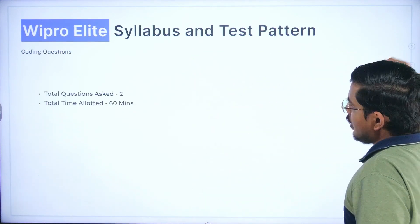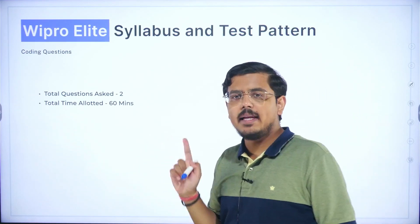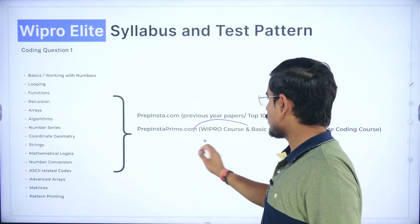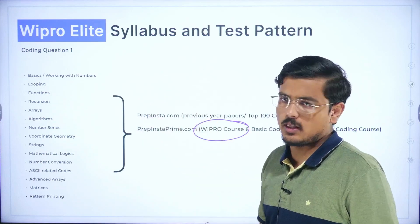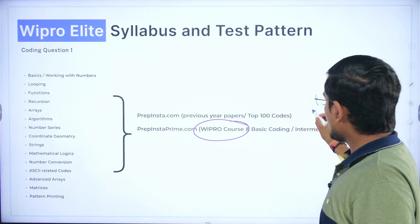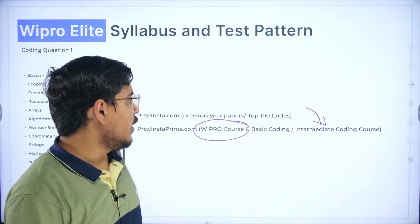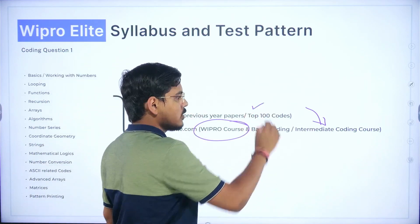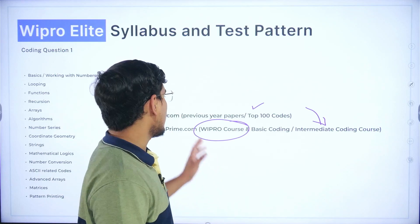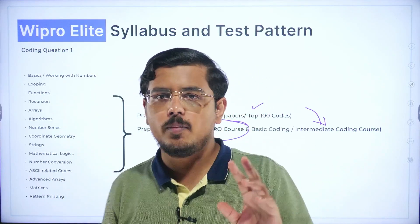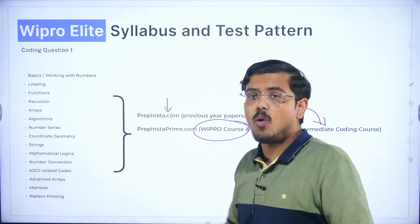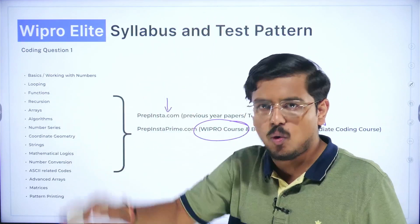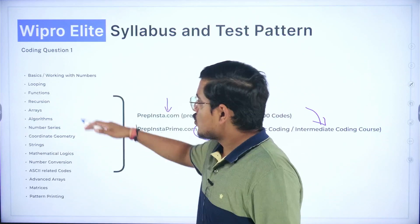Moving ahead to the coding questions. Anybody who wants to prepare these coding questions you have to go through these topics. Either you go to these Wipro courses that I showed you on PrepInsta.com, it is clearly covered there, or what you can do is you can also land up to the intermediate coding course which is available on prime again. If you are not able to bag these opportunities then what you can do is free of cost top 100 courses available, go ahead practice it out.